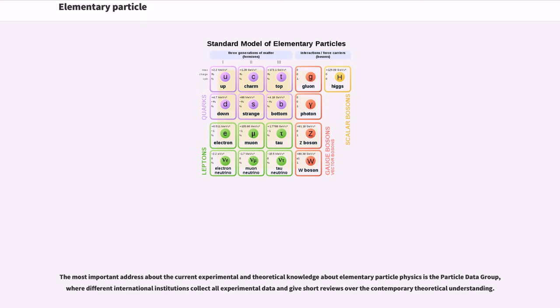The most important resource about the current experimental and theoretical knowledge about elementary particle physics is the Particle Data Group, where different international institutions collect all experimental data and give short reviews over the contemporary theoretical understanding.